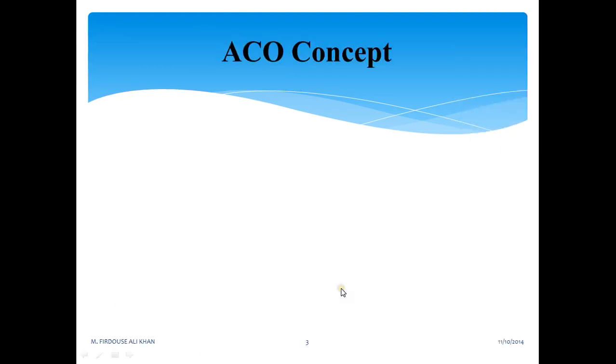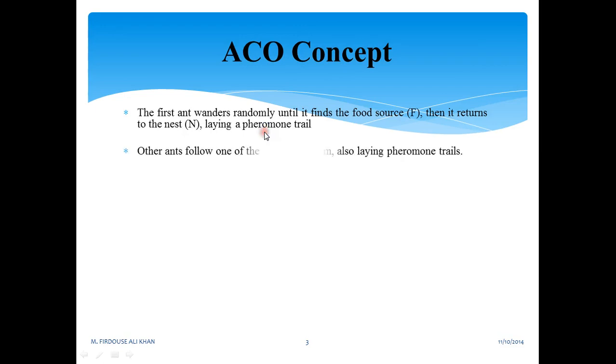Now coming to ACO concepts. The first ant wanders randomly until it finds the food source, and then it returns to the nest laying a pheromone trail. Pheromone is a chemical substance released by the ant when it goes in search of food. It is released from the tail of the ant.